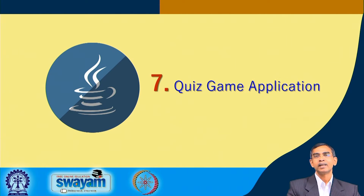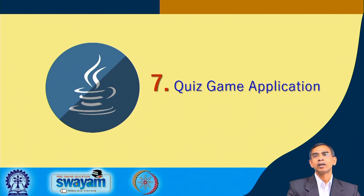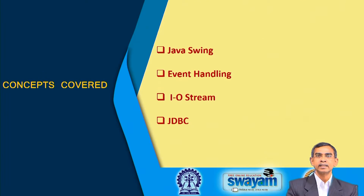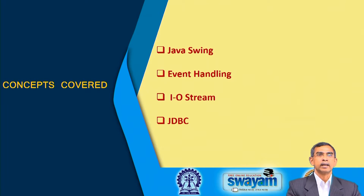Questions from a repository will pop up and the user will be allowed to select an option. If it is a correct option, the score will increase. If the user suspects any answer, just like in Kaun Banega Crorepati, 50 percent of the options will be removed and accordingly the score will be reduced, with only two options remaining. This is exactly the quiz game application. To implement it, Java Swing, event handling, I/O streams, and JDBC are required.